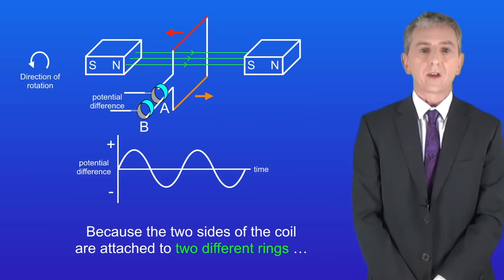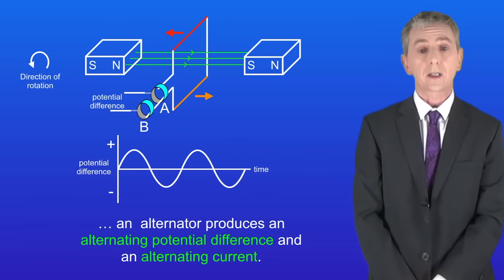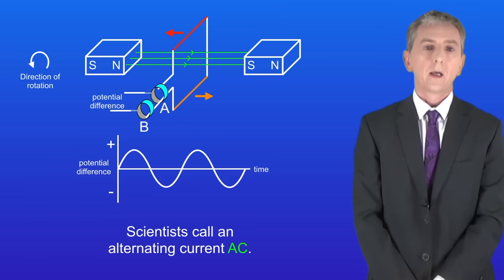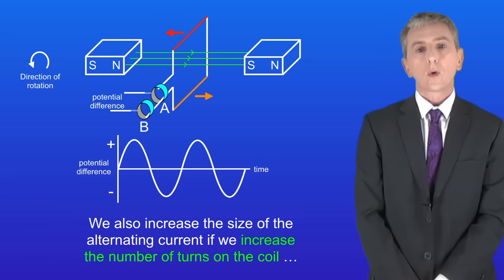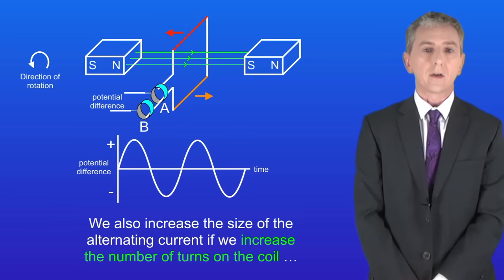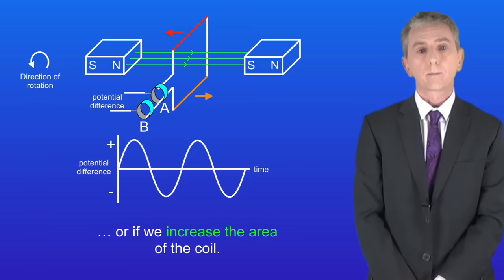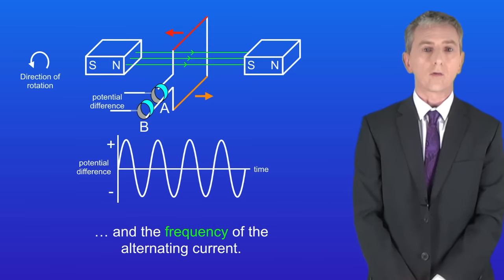The key point is that because the two sides of the coil are attached to two different rings, an alternator produces an alternating potential difference and an alternating current — scientists call this AC. If we increase the strength of the magnetic field, we increase the size of the alternating current. We also increase it by increasing the number of turns on the coil or the area of the coil. And if we increase the rotation speed, we increase both the size and the frequency of the alternating current.